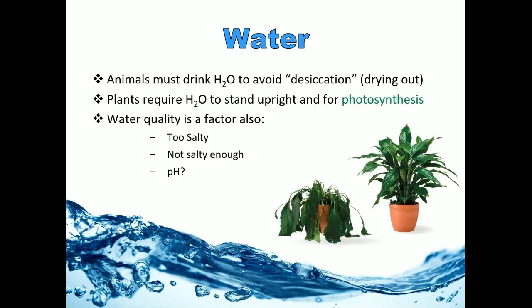Water availability is another major abiotic component of the environment and a big determiner of what biome you're in. All organisms need water to survive. Without enough water, you're at risk of drying out — which we call desiccation. Plants require water to stand upright, using it to fill their central vacuole; the interplay of pressure between the vacuole and cell wall keeps plants upright. If they dry out, they droop and the rate of photosynthesis is reduced.